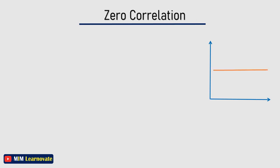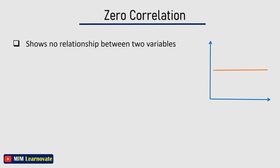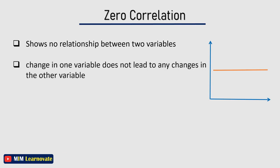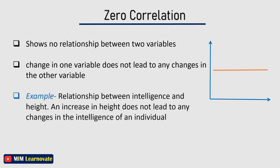Zero correlation indicates that there is no relationship between two variables. A change in one variable does not lead to any changes in the other variable. An example of zero correlation is the relationship between intelligence and height — an increase in height does not lead to any changes in the intelligence of an individual.